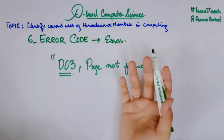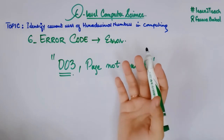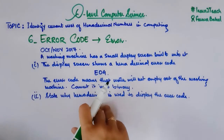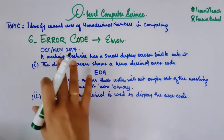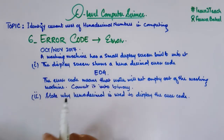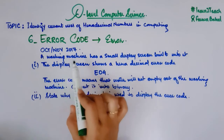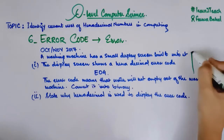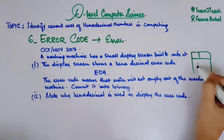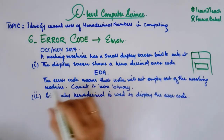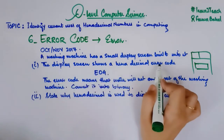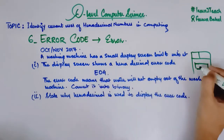Let's take a past paper example to be more clear about it. This is from October/November 2017. A washing machine has a small display screen built into it, and that display screen shows a hexadecimal error code E04.